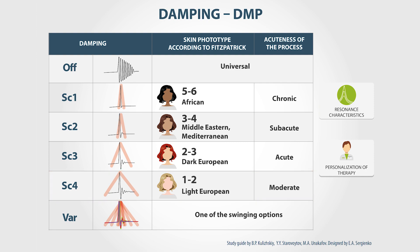There is also a varying Damping mode, where Damping is changed from switched off to 4 cyclically. That mode is intended to enhance the body's responsive reactions and is usually used in systemic therapy in combination with frequency modulation.